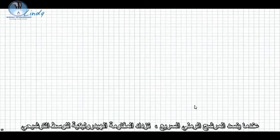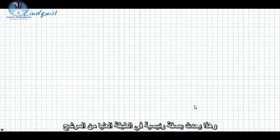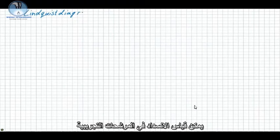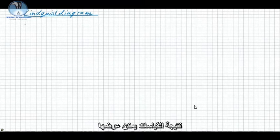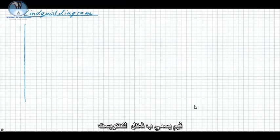When a rapid sand filter clogs, the hydraulic resistance increases. This mainly happens in the top layer of the filter bed. Clogging can be measured in a pilot filter by measuring the pressure drop over the filter bed in time. The results of the measurements can be shown in a so-called linguist diagram.